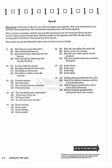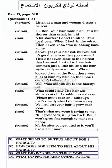Questions 31 through 34. Listen as a man and woman discuss a haircut. 'Hi, Bob. Your hair looks nice. It's a bit shorter than usual, isn't it?' 'A bit shorter? I don't think so. It's a lot shorter. When I look in the mirror, I don't even know who's looking back at me.' 'So you got your haircut, but you didn't get the haircut that you wanted.' 'This is not even close to the haircut that I wanted. I asked to have my hair trimmed just a little bit, and the hairstylist really went to town. When I looked down at the floor, there were piles of hair, my hair, on the floor. I couldn't believe it.'